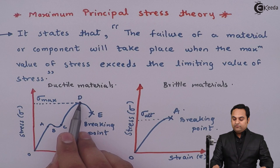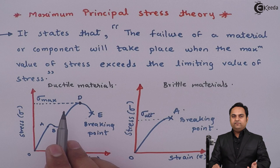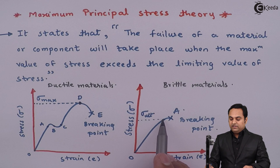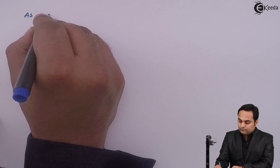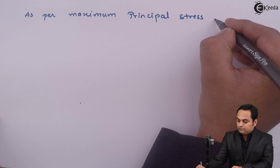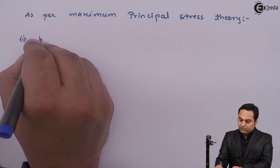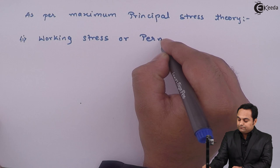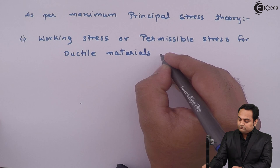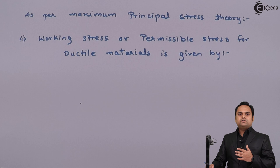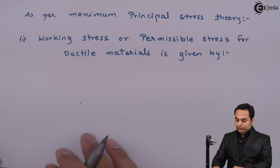If we are increasing the stress from point D, then the material can fail anywhere. Similarly, for brittle materials, if the material has reached the ultimate stress value, then it can break anywhere. As per the maximum principal stress theory, we need to find the working stress or permissible stress, and we need to reduce the value of working stress so that it does not go into the maximum stress condition.